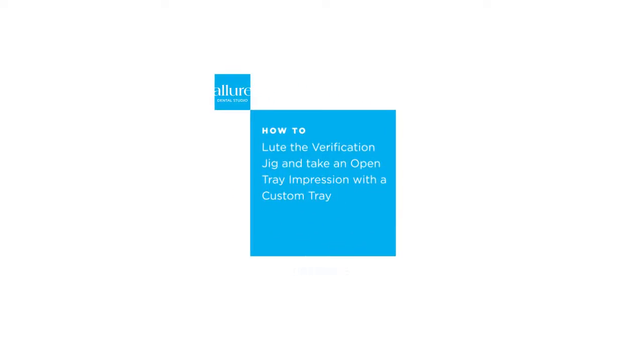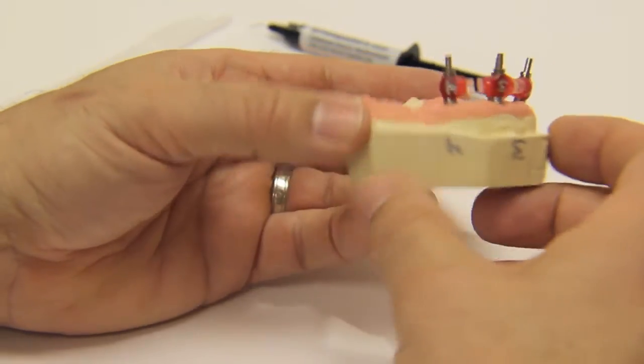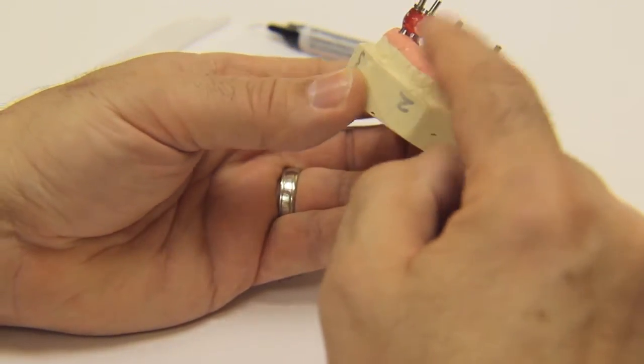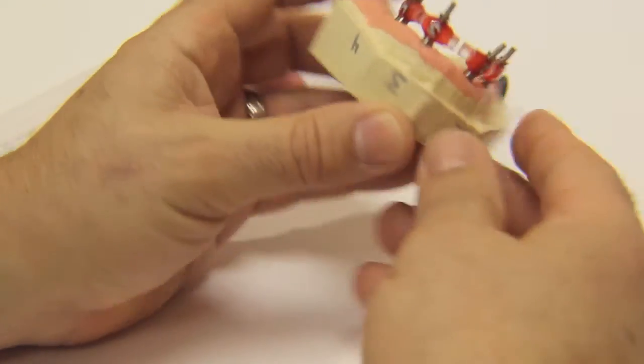Taking an open tray impression with a custom tray using the verification jig. The verification jig you receive from Allure Dental Studio is already placed on the model. Notice the corresponding numbers between the verification jig and the model.